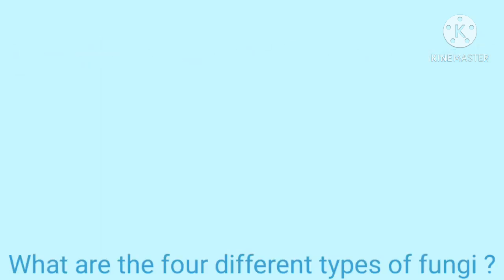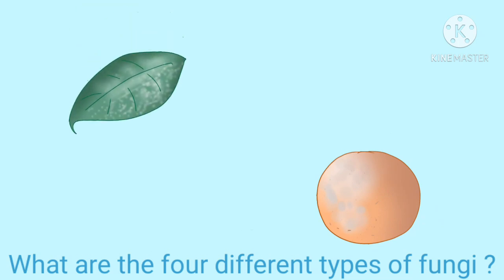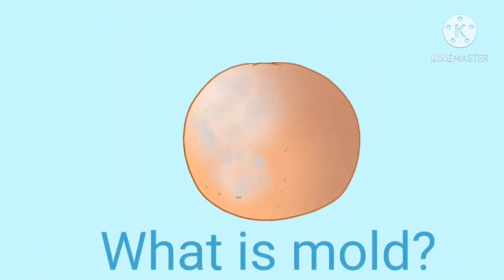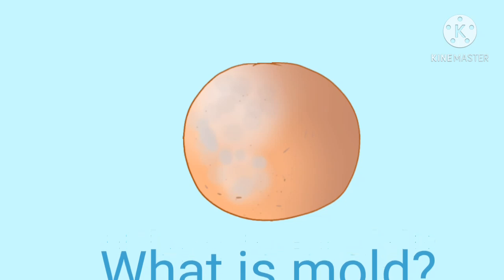There are four different types of fungi: mold, mildew, mushrooms, and yeast. Mold grows on any wet or warm surface. You can find mold almost anywhere. Mold comes in black, white, orange, green, or purple. Mold that grows on oranges can be used to make penicillin, an antibiotic that cures infections.